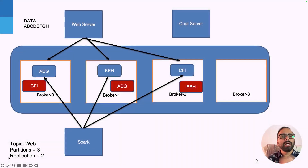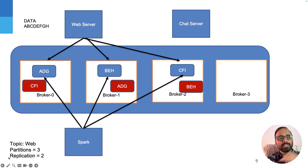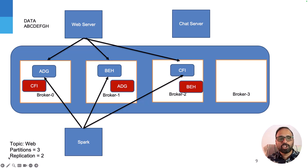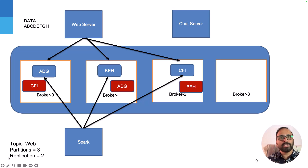So how does Kafka solve this problem? When you create a topic in Kafka — look at the bottom left corner of the picture — the topic is called 'web' and I've specified partitions equal to three. When I say partitions equal to three, it means whatever data the producer is sending can be divided and stored across three brokers. Rather than using a single broker, I can now use three brokers, and my topic spans across three brokers.